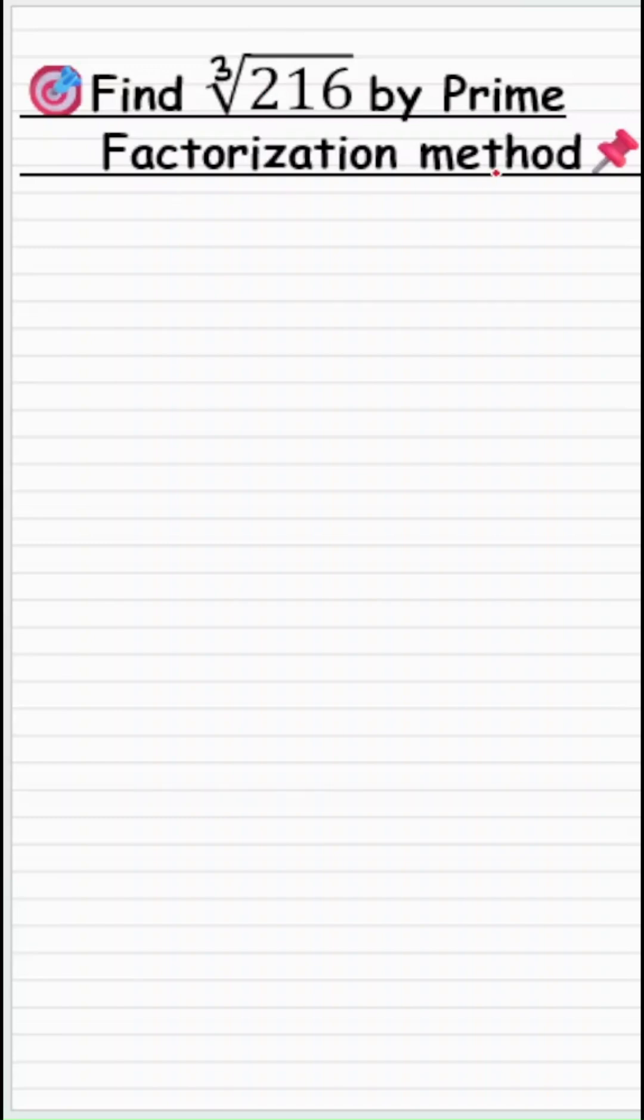Find the cube root of 216 by prime factorization method. Let's write 216 as the product of prime factors. 216 can be written as 2 times 108.